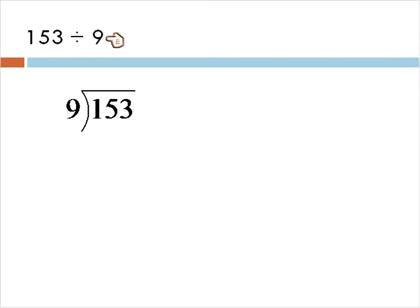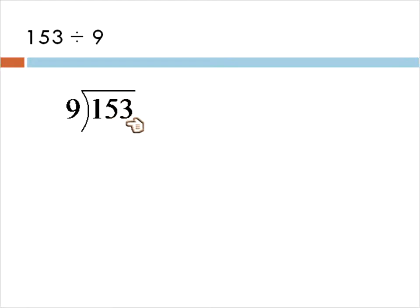The first thing is when we see a question like this — 153 divided by 9 — we want to write it in this way. The first number goes on the inside, and the second number goes on the outside. Usually it will be a bigger number on the inside, but that's not always the case. Put the first number on the inside, last number on the outside.